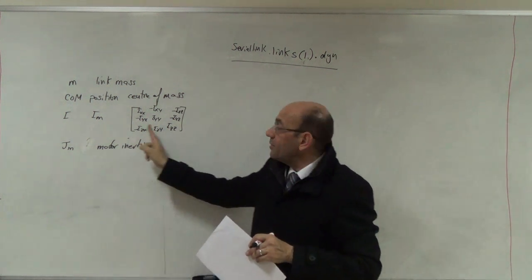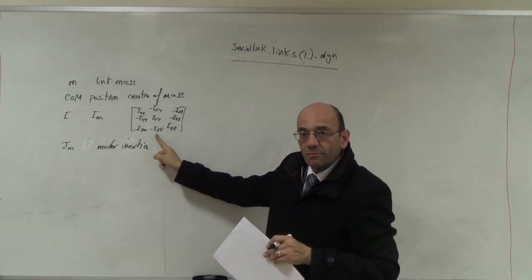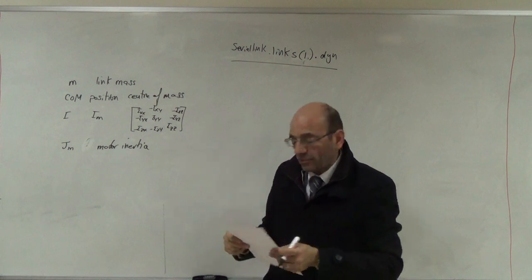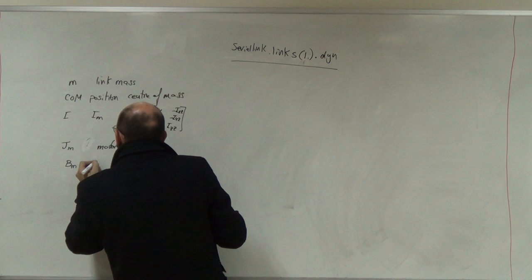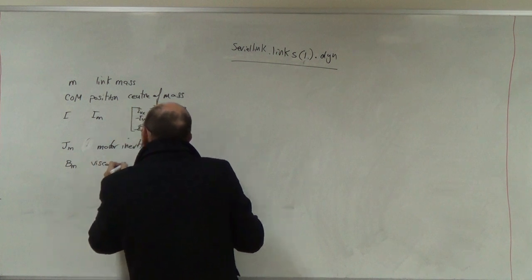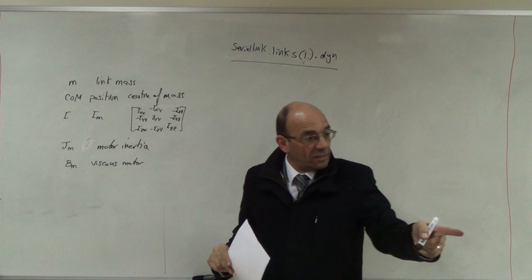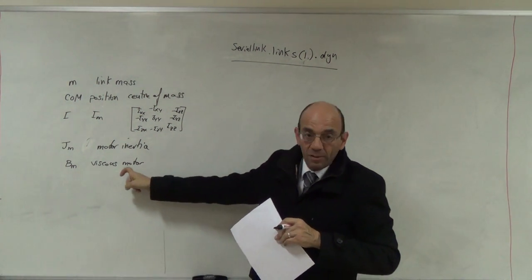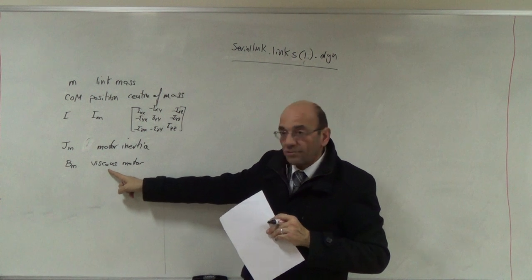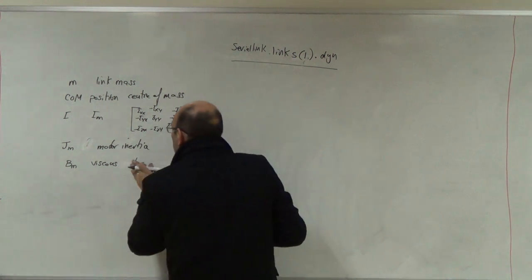So this is called a tensor, not a vector. It's a tensor. Then I have BM, which is for the motor. Someone asked last time about a stepper motor. A stepper motor might have a spring on its shaft.